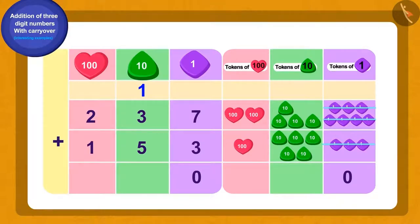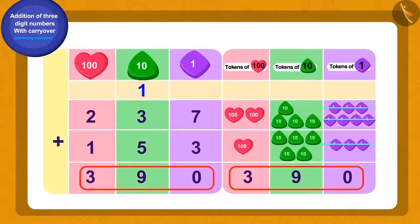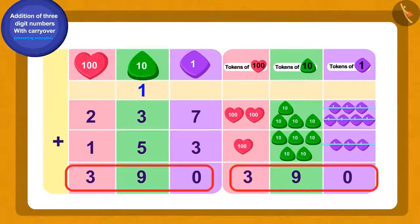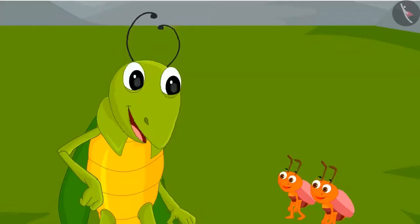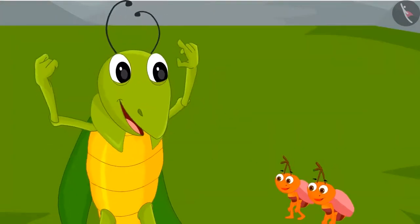If we add all the numbers written in the tens digit place, we will get nine. Now, at the end, if we add all hundreds digit place numbers, we will get three. Thus, there were a total of 390 animals in the herd.